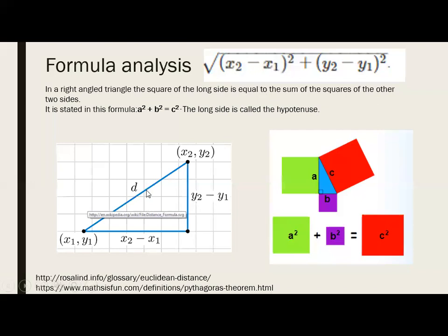In machine learning, Euclidean distance is not the only way to calculate distance between two points — there are different methods — but this is one of the most frequent approaches.